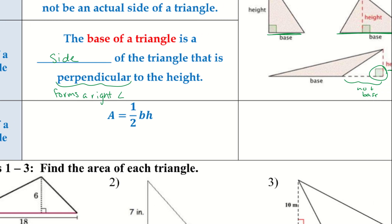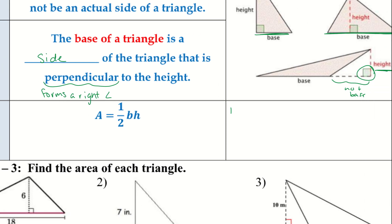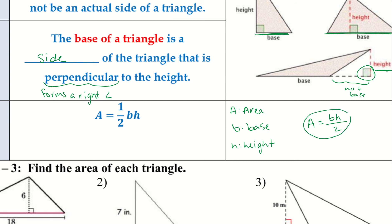The area of a triangle: A equals one-half times the base times the height. A stands for area, B stands for base, and H stands for height. You might also see this written as A equals B times H all over 2 — they mean the same thing, just written differently, whether the one-half is in the front or underneath.